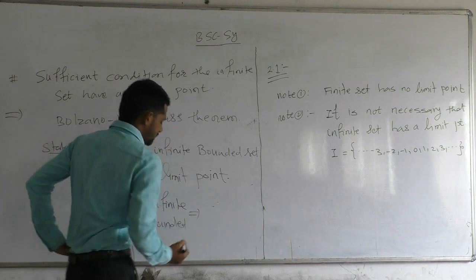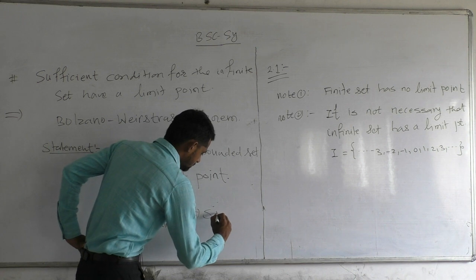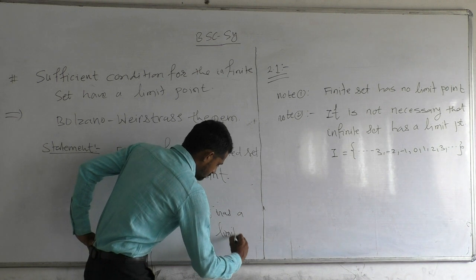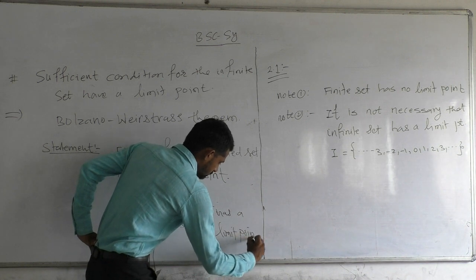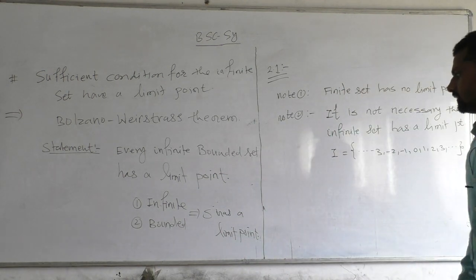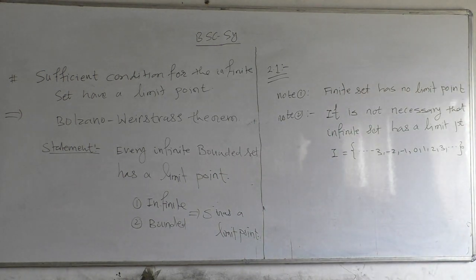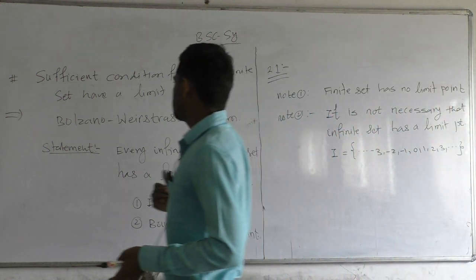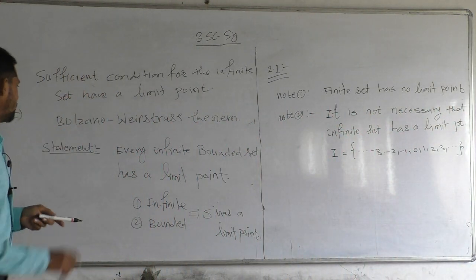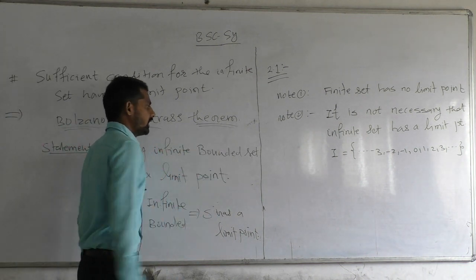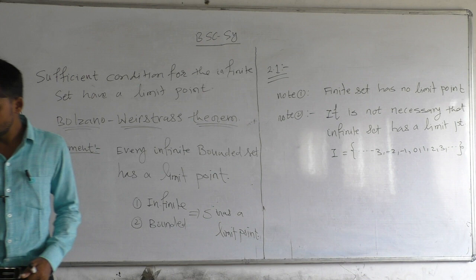If a set is infinite and bounded, then these two conditions imply that the set has a limit point. If the set satisfies both conditions — infiniteness and boundedness — then the set must have a limit point according to the Bolzano-Weierstrass theorem. This is the sufficient condition for an infinite set to have a limit point.